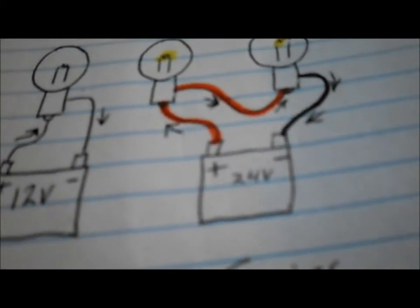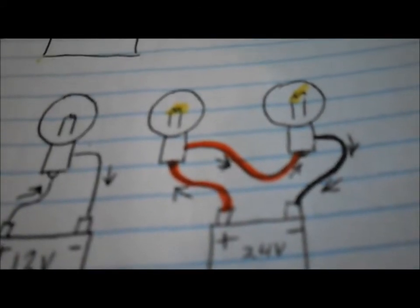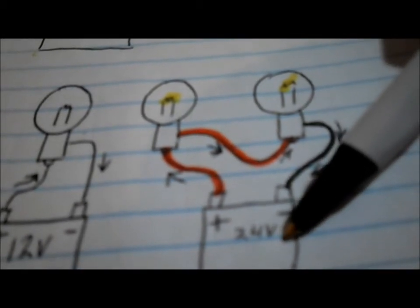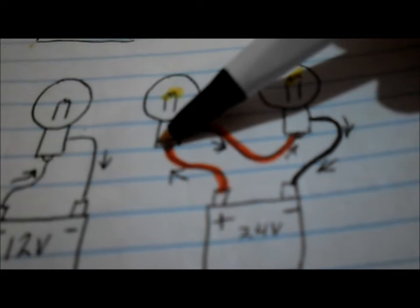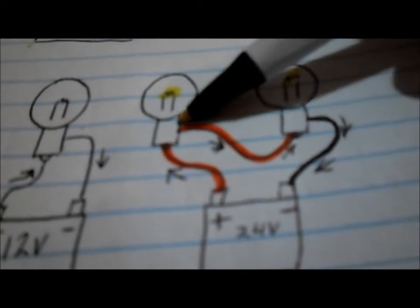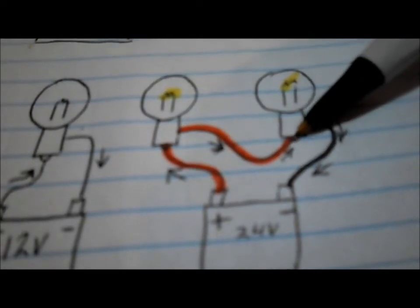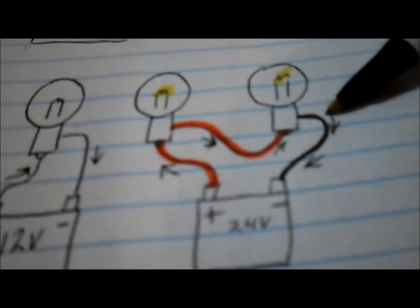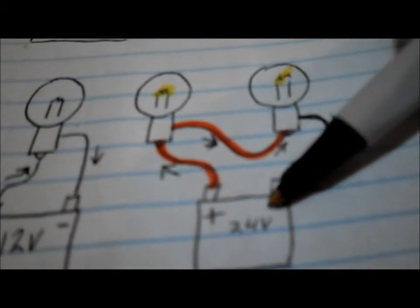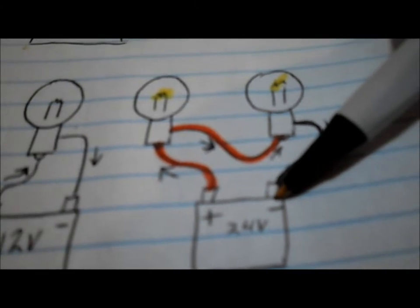For our 24 volt system, we need to run two bulbs in series. So we have a 24 volt battery pack, our power would go to the power end of one bulb, the ground would come out and go into the power end of the second bulb, that way the two bulbs are in series. And then the ground from the case would go back to our ground of the battery to complete the circuit.